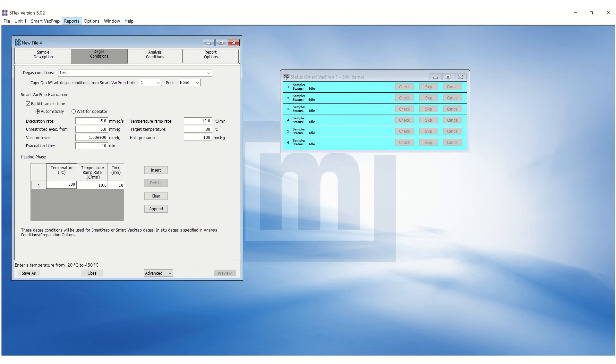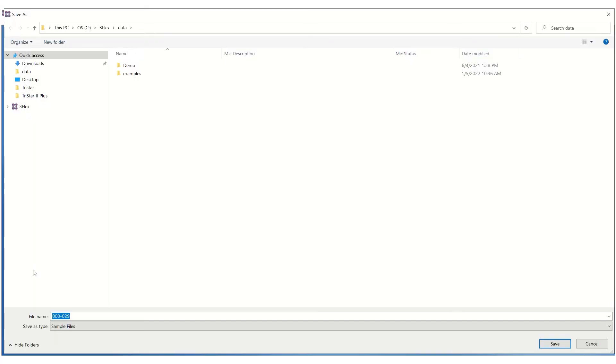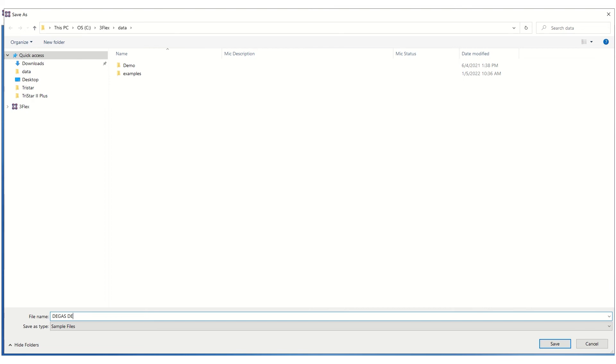Under the heating phase, enter the desired temperature, ramp rate, and time. Save the file. Note the same SMP file can be used for degas and analysis.